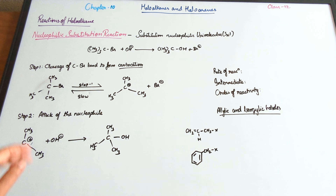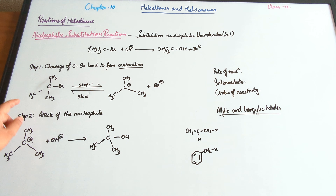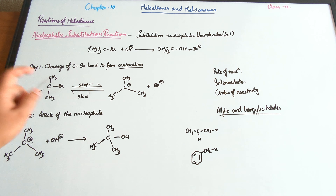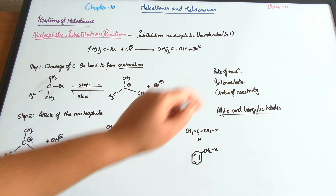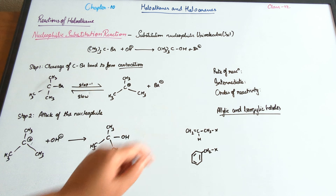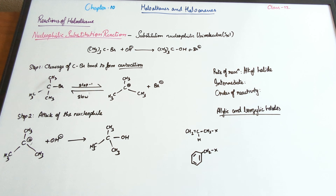The slow step is also the rate-determining step, and only one of the components is actually undergoing the slow step. Because of that, the rate of the reaction only depends upon the alkyl halide, and because of that it is a unimolecular substitution reaction. So the rate of the reaction depends on the alkyl halide.